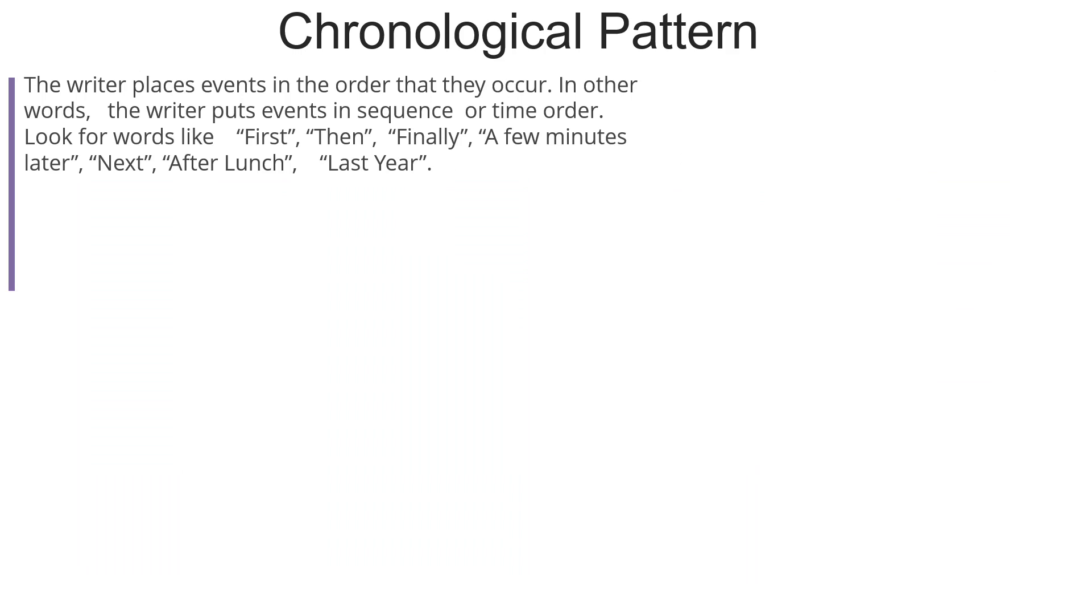The first type of pattern of organization is the chronological pattern. What does it mean to say we are using a chronological pattern? When the writer places incidents or events that happen in a story in the order that they occur. In other words, the writer puts events in sequence or time order.